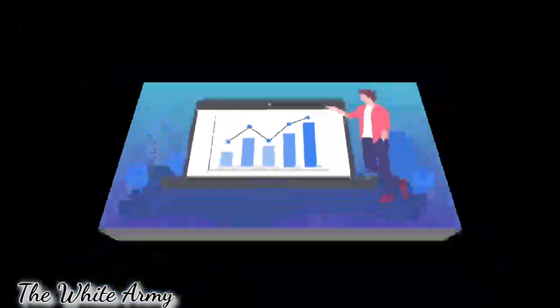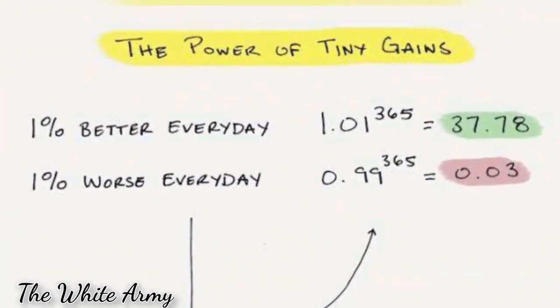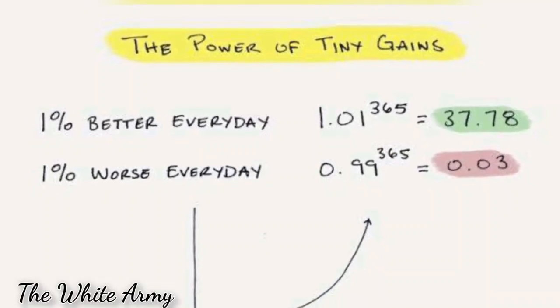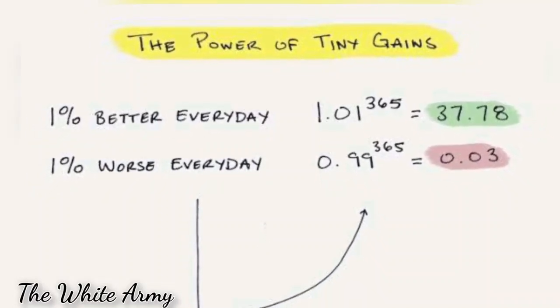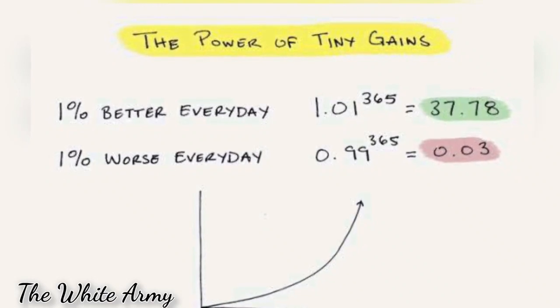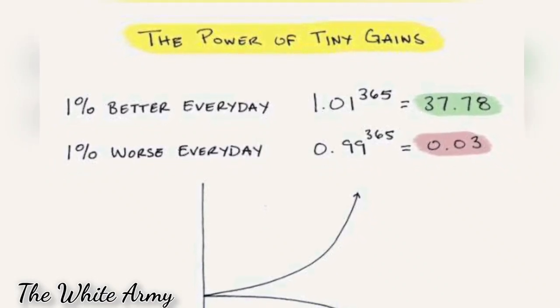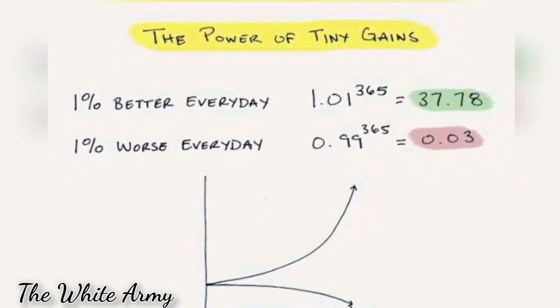Just like how 1.01 and 0.99 are just 1% different from 1, but when multiplied by themselves 365 days of the year, they turn into such hugely different numbers.